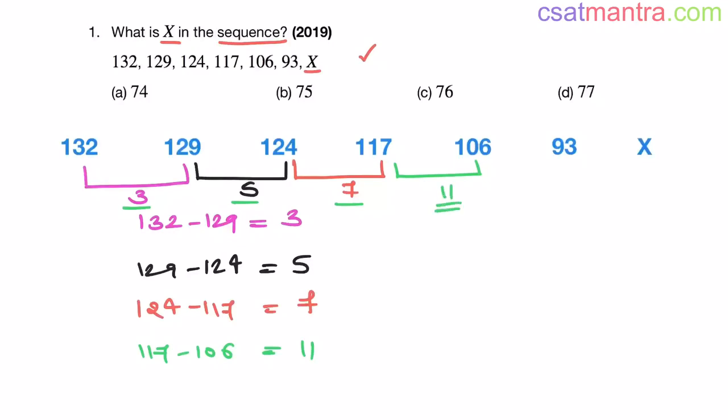Now let's see, 106 minus 93. Okay, 106 minus 93, this is 13. Yes, it follows a prime number pattern, my friends. So what is the next prime number? My friends, that is 17.